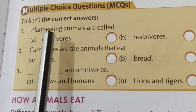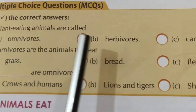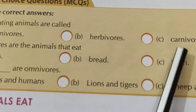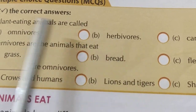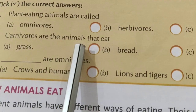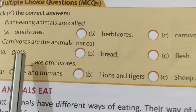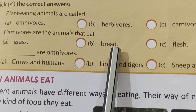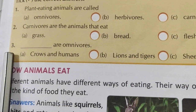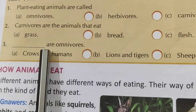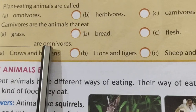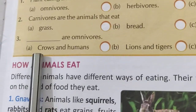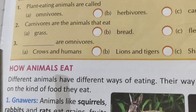Now a few questions. Plant-eating animals are called — omnivores, herbivores, or carnivores? The word 'herb' relates to plants, so the answer is herbivores. Carnivores are animals that eat flesh — like lion and tiger, जो flesh खाते हैं। And omnivores eat both plants and flesh — like crows and humans. Lion and tiger don't eat grass; sheep and goat don't eat flesh. So crows and humans are omnivores — correct answer.